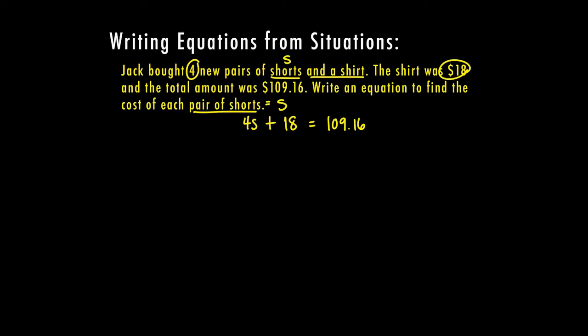to do is subtract the $18 cost for the shirt because I know I spent that. So now I can see that this goes away, so now four pairs of shorts cost $91.16, and